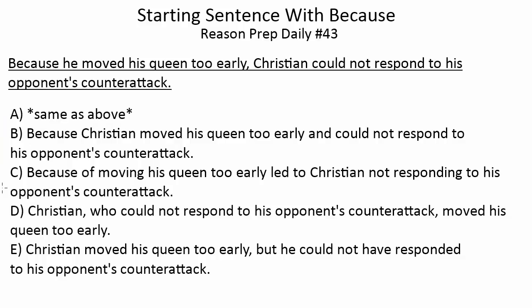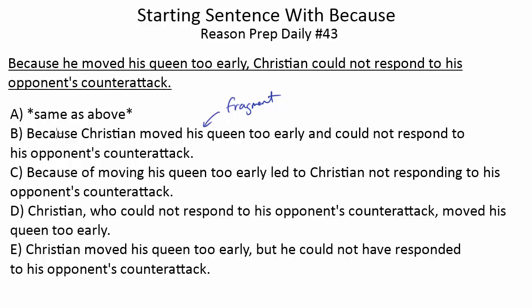Let's skip A for now and look at B. In B we're going to see the issue that sentences starting with 'because' often have. Choice B reads: 'Because Christian moved his queen too early and could not respond to his opponent's counter-attack.' The problem with B, and the reason why you are taught not to start a sentence with because, is that B is a fragment — an incomplete sentence. Specifically, it's a subordinate or dependent clause without a completing independent clause. One way to fix this would be to put a comma after it and then add an independent clause to make the sentence stand on its own. But we don't have that here, so as written, B is a fragment.